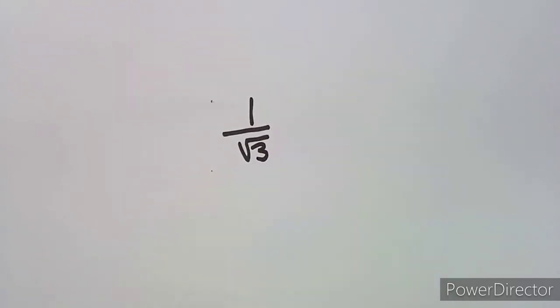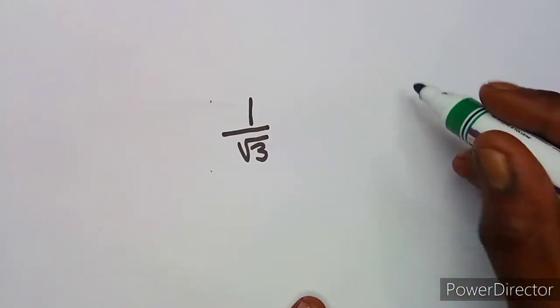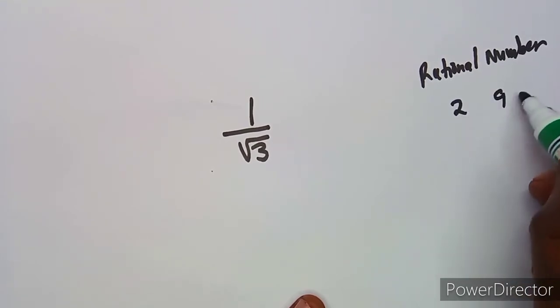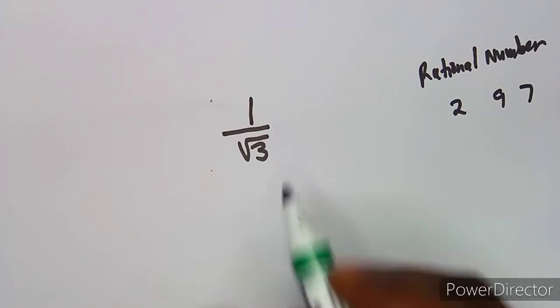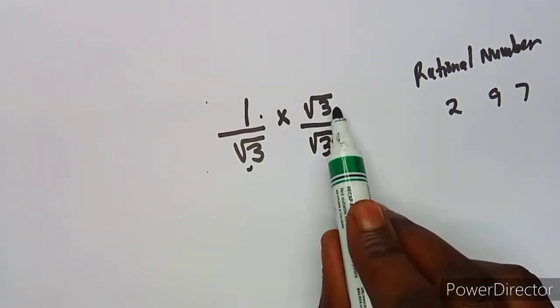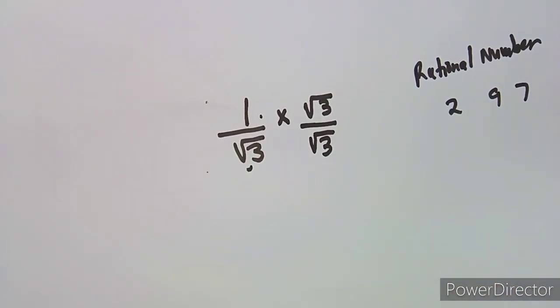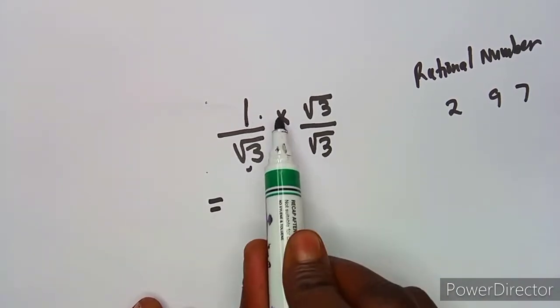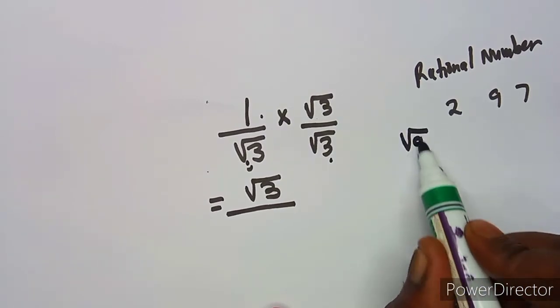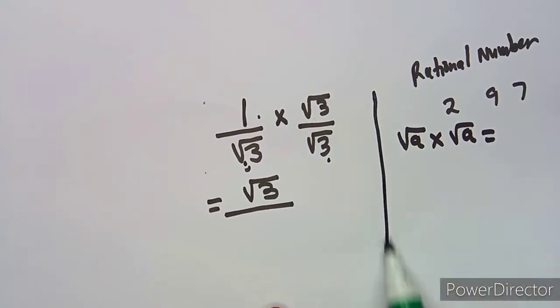Why are we doing this? We are talking about rationalizing the denominator. It means if you write this part as one over square root of three, the denominator is not allowed to carry a number which is a square root. That is why we have to rationalize — to rationalize is to make the denominator a rational number. A rational number refers to a number such as two, nine, seven — any number which is not under the square root. So you are going to multiply the numerator and denominator by the denominator, which is square root of three.